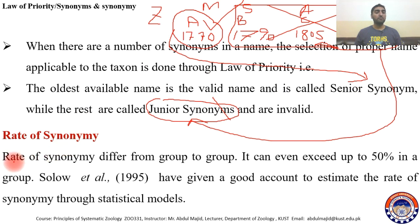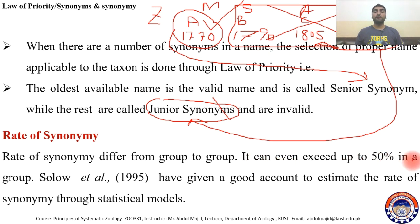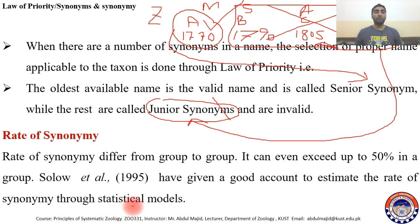Rate of synonymy differs from group to group. In some groups the synonymy rate is high, and in some groups the synonymy rate is minimal — it can even exceed 50% in a group. Solow et al. in 1995 gave a good account for estimating the rate of synonymy through statistical models.